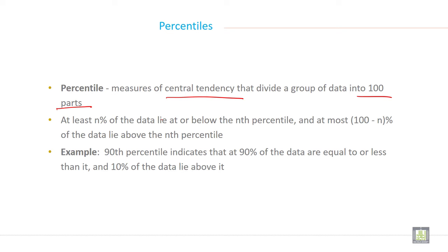For example, 90 percentile indicates that 90 percent of data are equal to or less than it and 10 percent of the data lie above it.